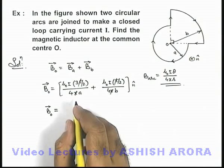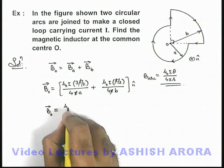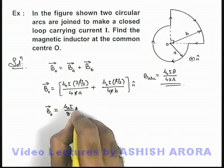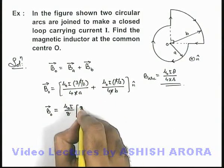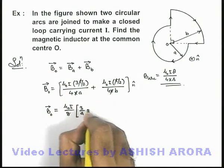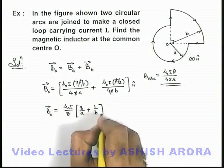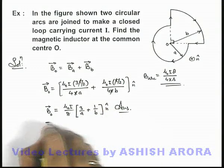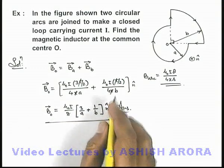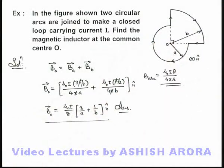So in this situation we can take μ₀ i by 8 common and the result inside we are getting is 3/a plus 1/b times n̂. That will be the answer to this problem where n̂ gives us the unit vector in the direction normal to the plane of this paper inside.